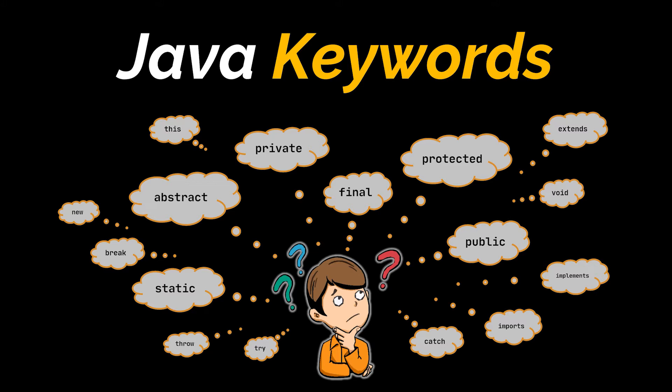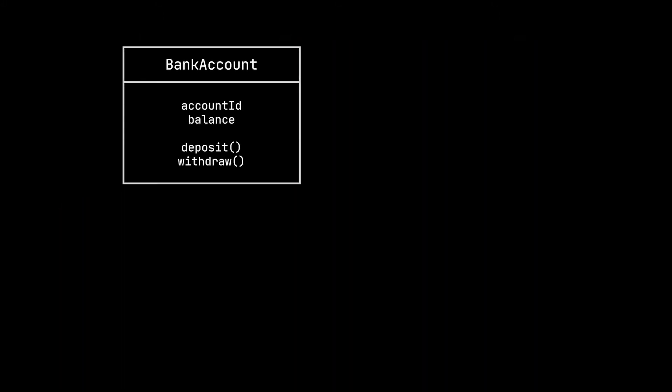To do this, let's start with a practical approach and take the famous BankAccount class. Give it an accountId, a balance, and two methods: a deposit and a withdraw. Now if we choose to make the balance attribute private, it means that we restrict its access to the inner workings of its own class.